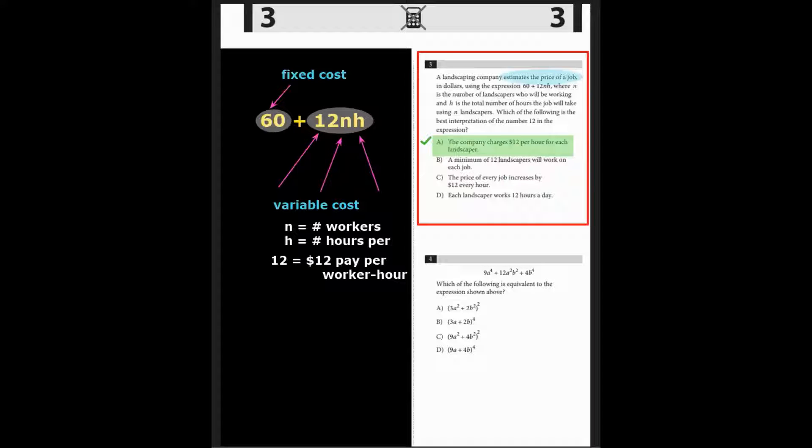Well here at question 3, we have a fixed cost, say $60 for the company to haul all of their equipment to the site. And then 12NH, which is a varying cost. We're given that N is the number of workers and H the number of hours the job will take. So multiplying workers by hours is NH are the worker hours that will be on the job site.